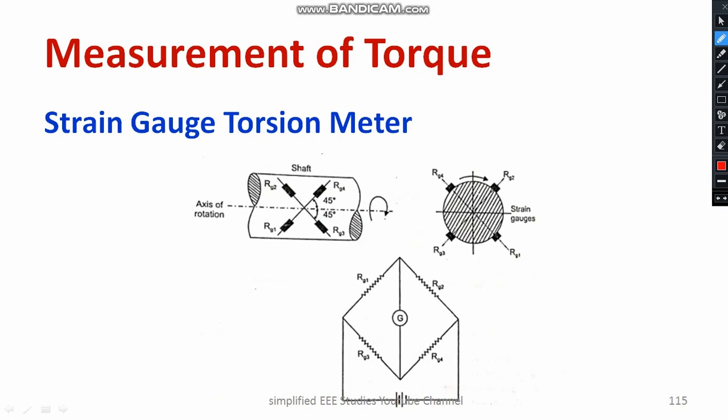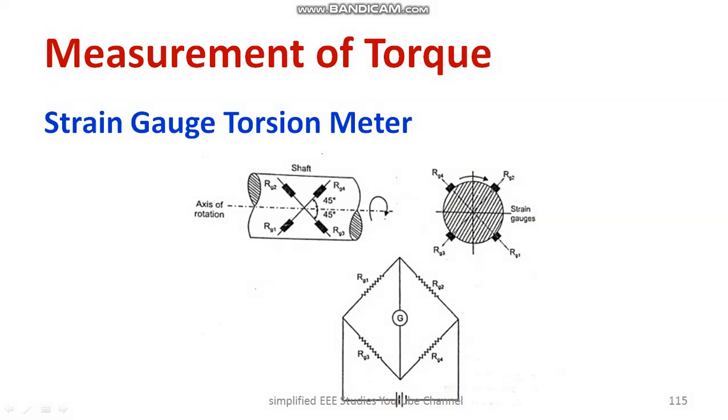The shaft rotates in the clockwise direction and the goal is to measure the torque. The strain gauge is kept along with the rotating shaft. Once rotation happens, the strain gauge output is taken and bridge balancing is done using the Wheatstone bridge. RG3 and RG4 can then be determined.